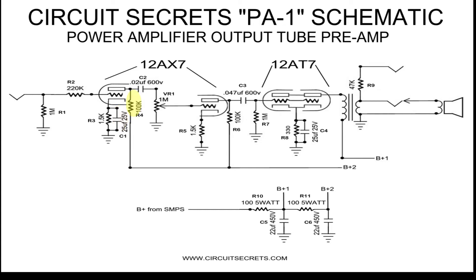R4 is the plate resistor. The idea of this is to work as part of a filter network with the coupling capacitor. As a general rule, the higher the value the higher the gain, and the more audio signal passes through the coupling capacitor.